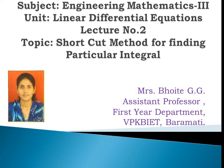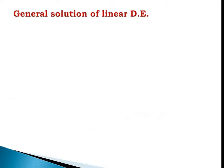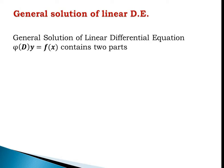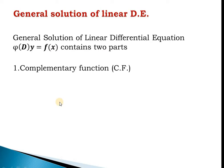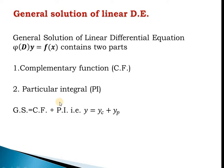In this video we see how to find PI and what PI is. First, let me revise the general solution for a Linear Differential Equation. For any Linear Differential Equation phi(D)·y = f(x), the general solution contains two parts: one is the Complementary Function (CF) and the second is the Particular Integration (PI). The general solution is GS = CF + PI, or y = yc + yp, where yc is the Complementary Function and yp is the Particular Integration.